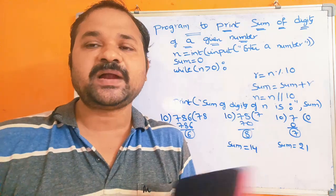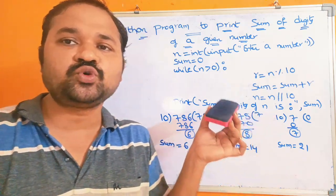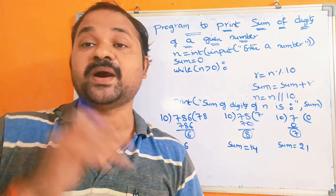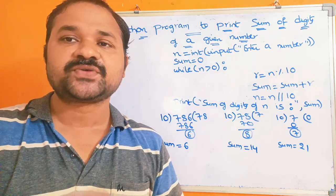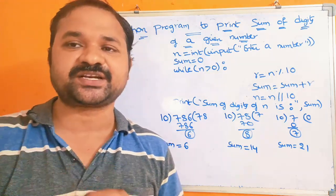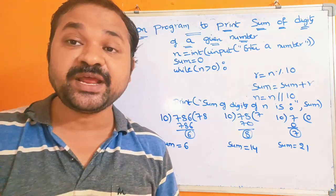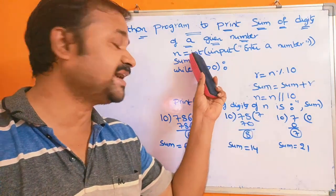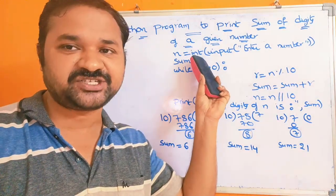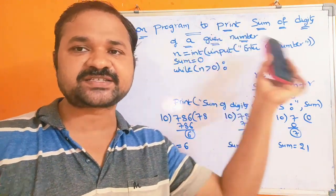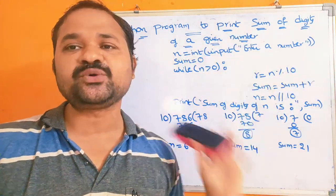Here we have to print the sum of the digits of the number, so we have to convert the string into an integer. That should be done with the help of the int function. The int function will convert that string into an integer.